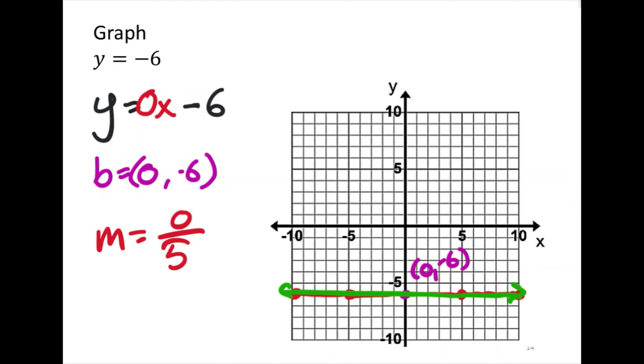Now, you didn't necessarily need to change this in slope-intercept form. If you knew y equals negative 6, you should know that it goes through the y number line, which is the y-axis, at negative 6 right here. And it's just a flat line. If you ever get y equals just a number, it's just a flat line like this.